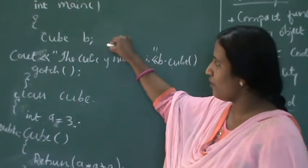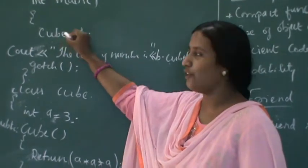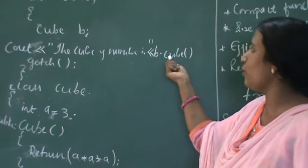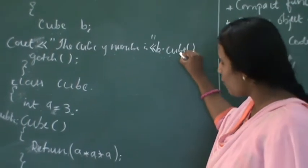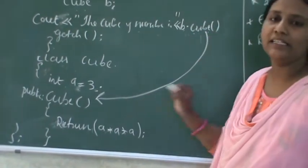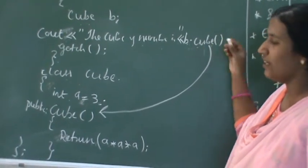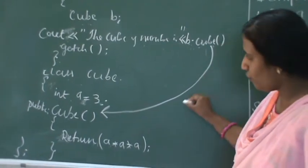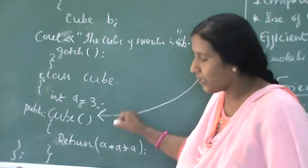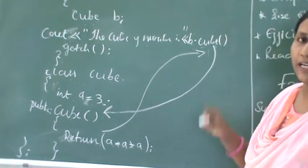In the main function, cube is the class name and B is the object. To find the cube of the number, as soon as the function is called — B dot cube — the control will be sent to the function where exactly it is present. Whatever the computer control is there, that control will be sent to the particular location where exactly the function is present, so that it will perform the task. After performing the task, it holds the value and gets back.